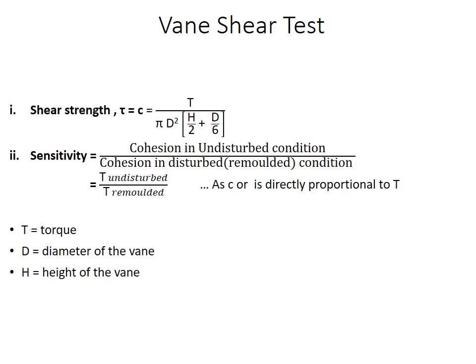Hence you can see no friction or phi term in the formulas here. So shear strength is directly equal to the cohesion of the soil and is given by the formula where T is torque, D is the diameter of vane, and H is the height of the vane. Sometimes they may also ask you to find out the sensitivity of the soil.